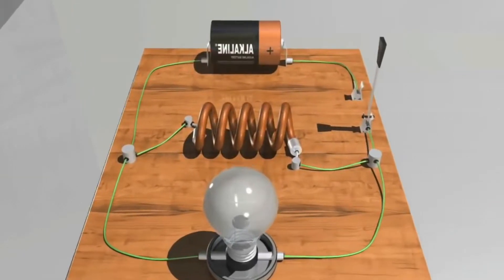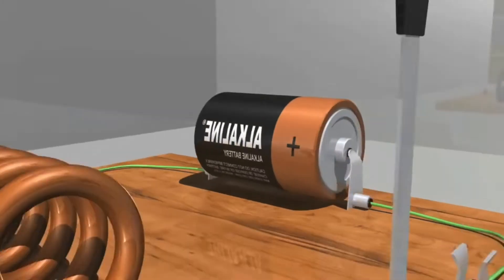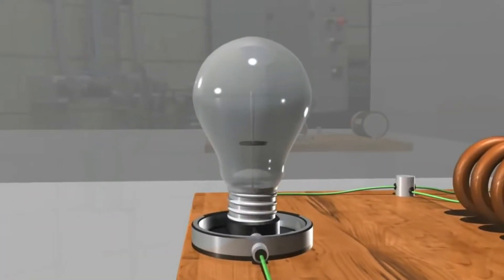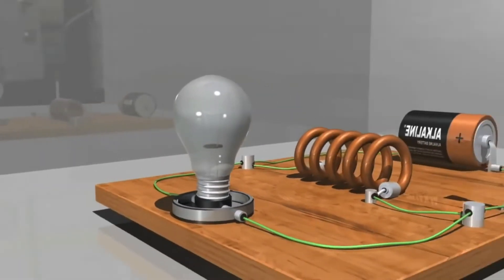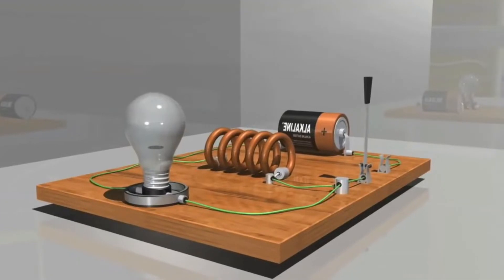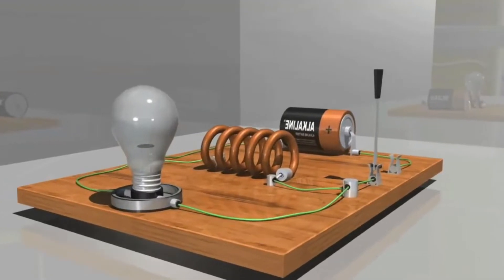Here is a simple circuit featuring a battery, a knife switch, and a light bulb. This circuit also contains a wire coil that serves as an inductor.